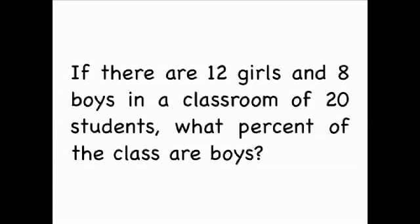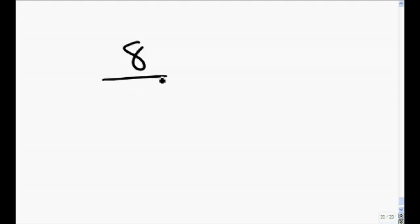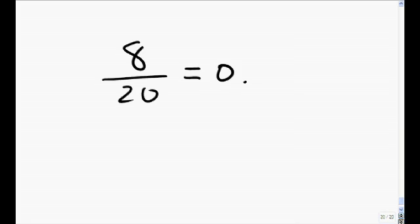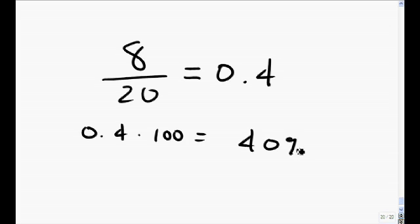If there are 12 girls and 8 boys in a classroom of 20 students, what percent of the class are boys? 8 boys out of 20 students is 0.4. Multiplying by 100 gives us 40 percent. So 40 percent of the class consists of boys.